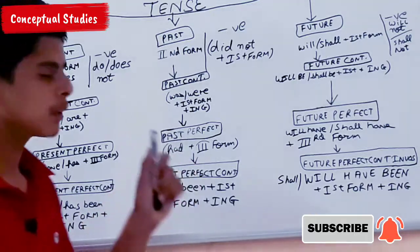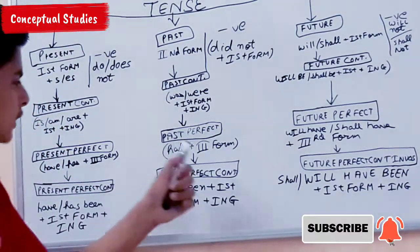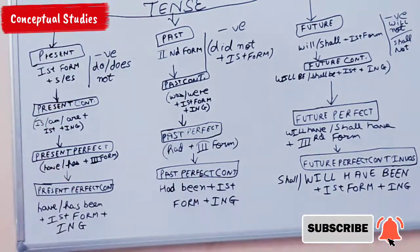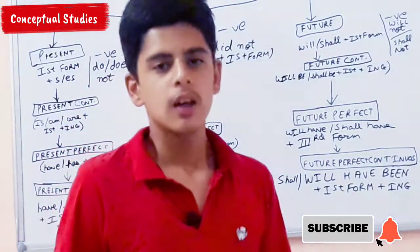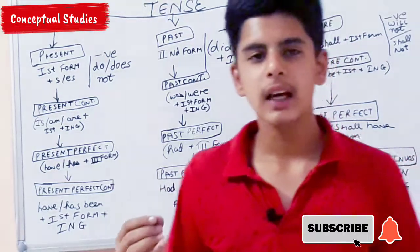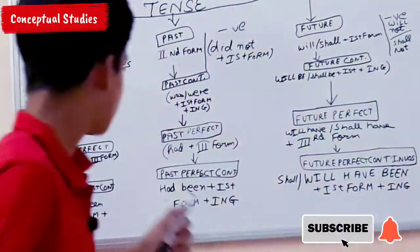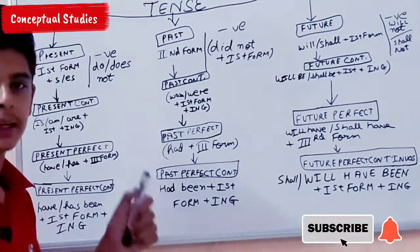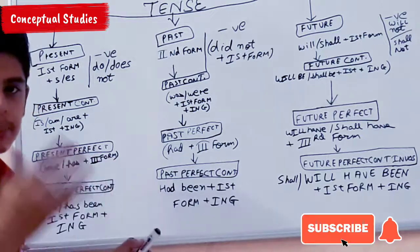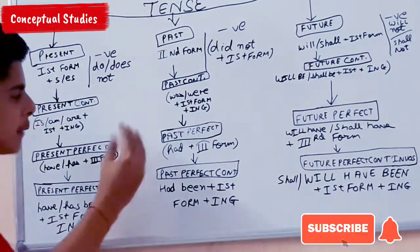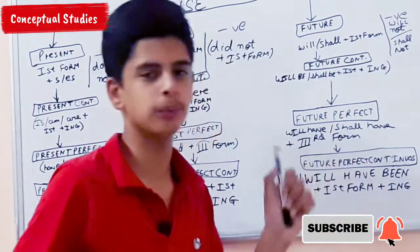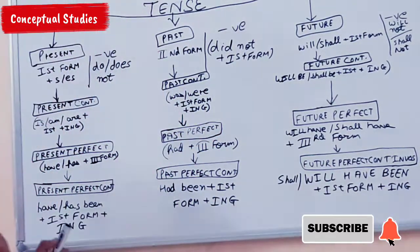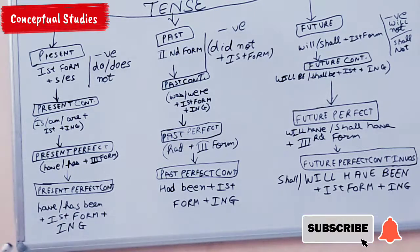In Present Perfect, 'has' or 'have' plus the third form is used. Then in Past Perfect, 'had' plus the third form is used — for example, 'He had played.' Play → played. For Future Perfect, 'will have' or 'shall have' plus the third form is used.